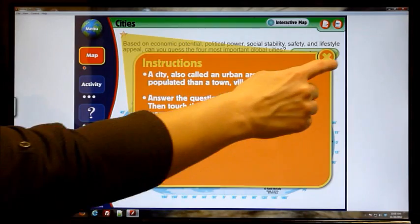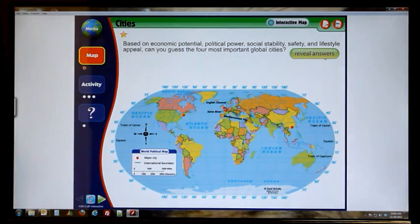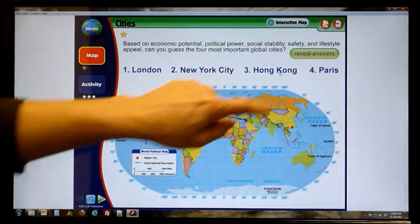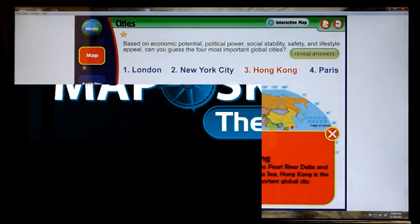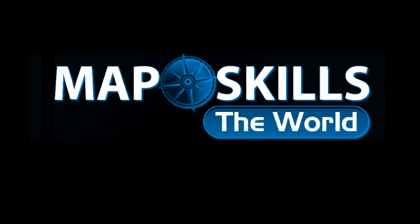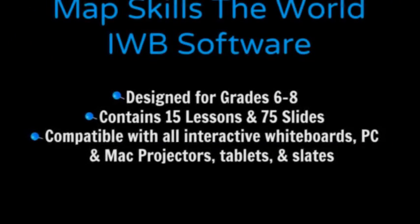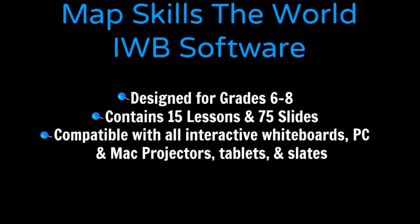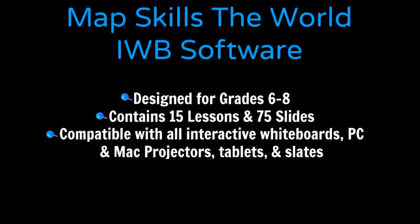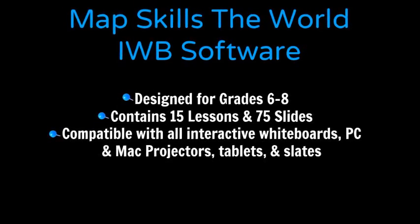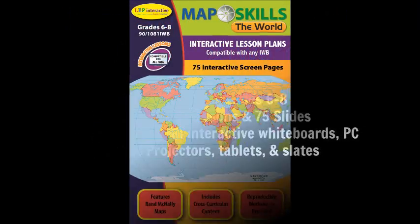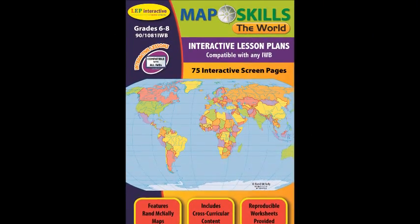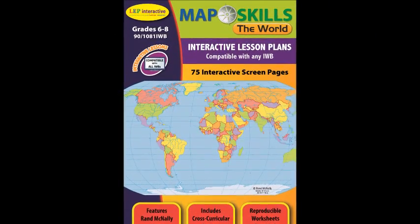Each lesson map includes special attributes that make learning about the world come to life. These are just some of the highlights from Map Skills the World. With 75 interactive screen pages, loads of added content, and dozens of reproducible activities, you will never have to worry about keeping your students interested in learning.